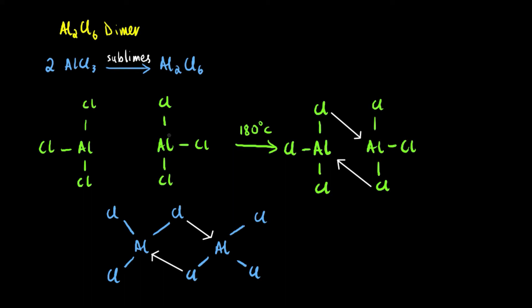The first example we will be covering is the Al2Cl6 dimer. This dimer is formed when two molecules of aluminum chloride, AlCl3, sublime and form Al2Cl6. This is formed by creating a dative bond between the two AlCl3 molecules. Let's look into detail how exactly that is formed.